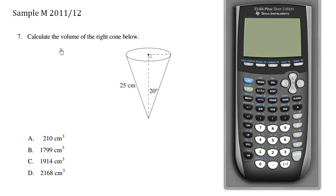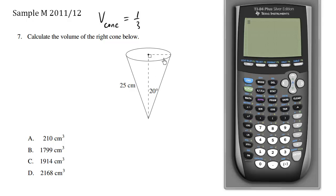Let's calculate the volume of the right cone here. We can see a cone and we're trying to find the volume. We know the volume formula — the volume of a cone, given at the back of your provincial, is equal to one third the area of the circle times the height. This is essentially one third of the volume of a cylinder.